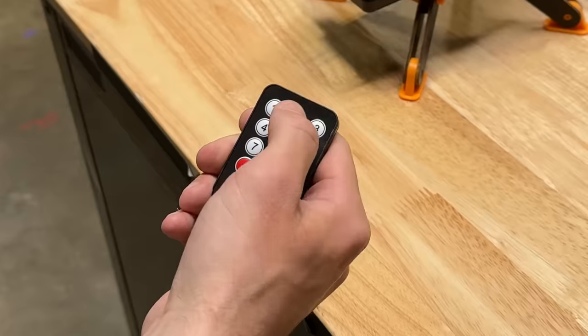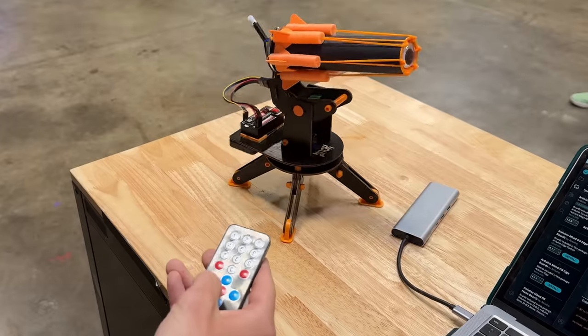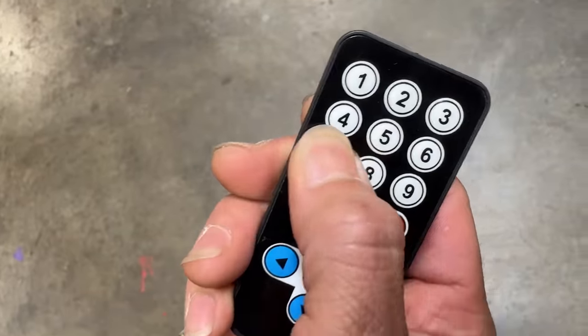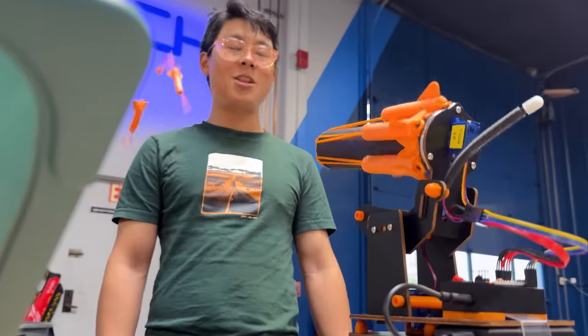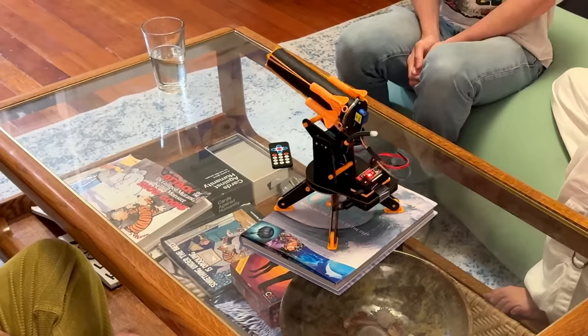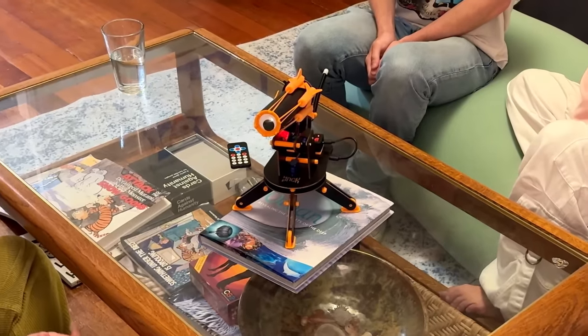So for example, for the desktop turret, you can make it password protected so only you can control it. And if your friend tries and gets it wrong, the robot's gonna let them know that. Or there's a party mode sort of like pie face where everyone sits around the table and it will spin around as it terrifyingly plays with your emotions.